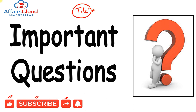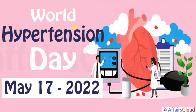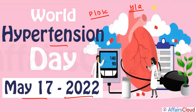World Hypertension Day was observed on 17th May 2022, to create awareness and promote hypertension prevention, detection, and control. Hypertension, also known as high or raised blood pressure, is a condition where blood vessels have persistently raised pressure. The theme of World Hypertension Day 2022 is: 'Measure your blood pressure accurately, control it, and live longer.'